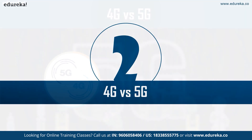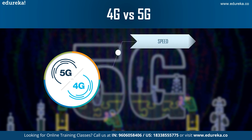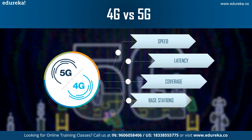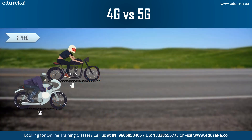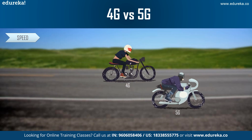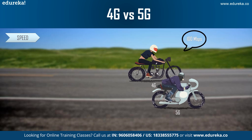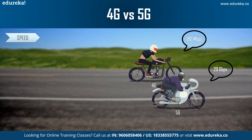5G varies from its existing 4G in 5 factors: speed, latency, coverage, base stations, and bandwidth. When we talk about speed, theoretically the speed of 4G is 100 Mbps, with actual speed lying between 12 to 60 Mbps. Whereas 5G networks would have theoretical speed as high as 20 Gbps, with actual speeds close to 1 Gbps, making 5G about 100 times faster than 4G.